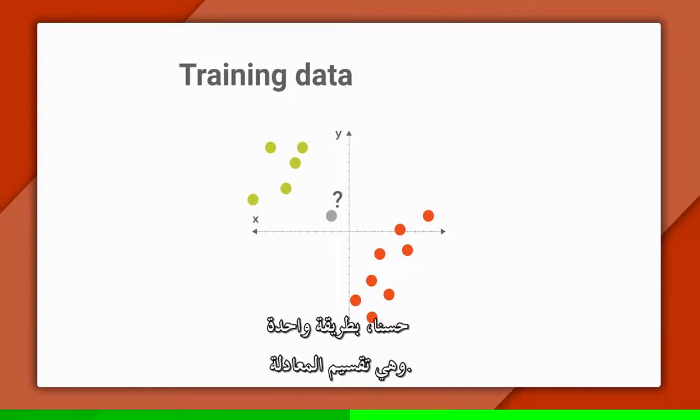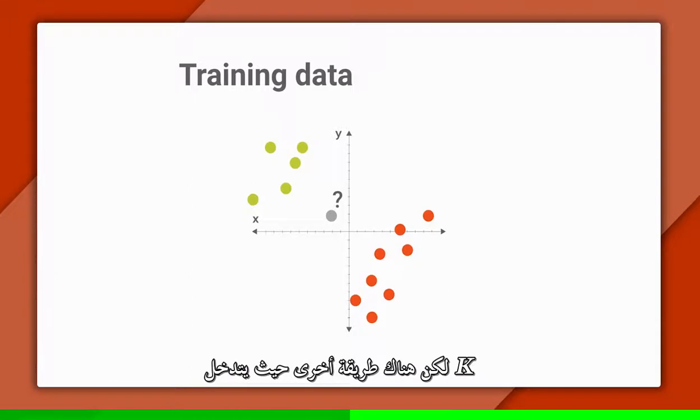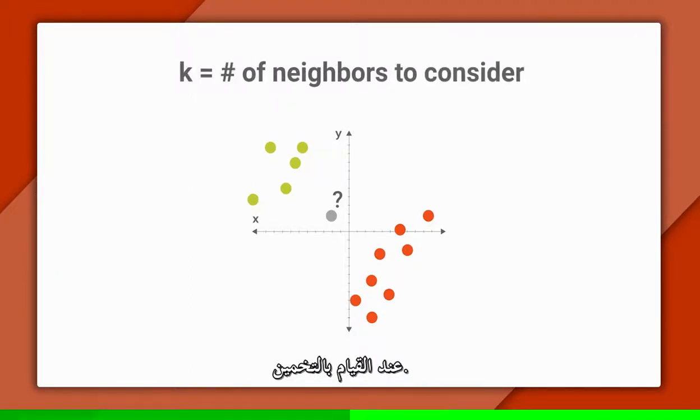Well one way is we could randomly break the tie. But there's another way, and that's where k comes in. k is the number of neighbors we consider when making our prediction.